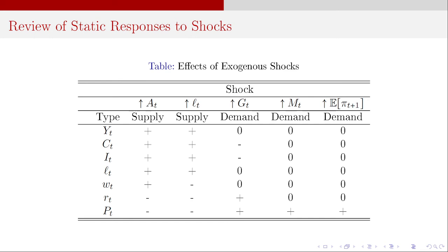We're going to wrap up by summarizing these signed responses to the shocks. I covered the first four. There's also a fifth — an increase in expected inflation — but we're not going to go through that. The focus going forward is more on the monetary policy responses. I've got the source of the shocks, the type of shock, and the qualitative signed responses — whether something goes up or down. Take a look at these, because this is going to be wildly useful when we start thinking about how the impulse responses are going to look in the next video. Thank you for watching.